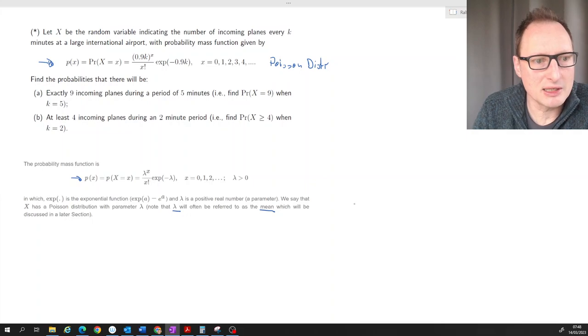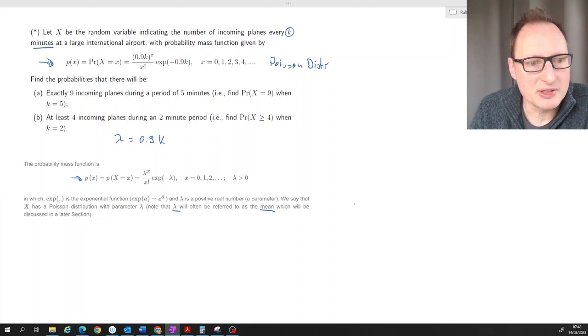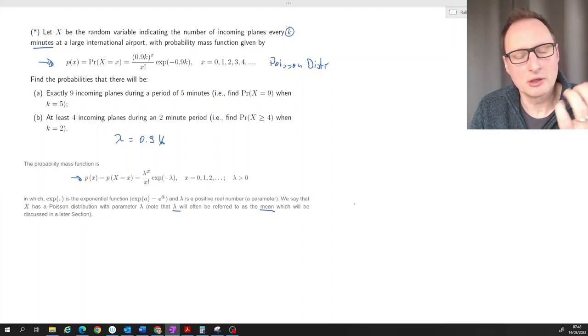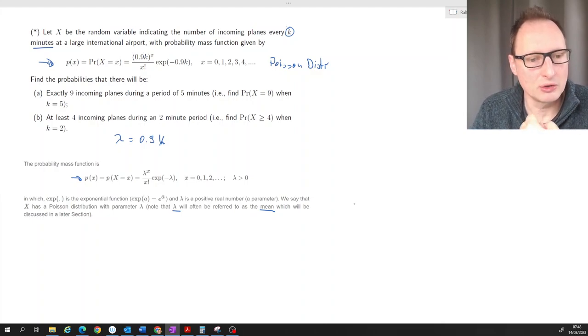Now we see here in this case the lambda is equal to 0.9k and what is that k? That k stands for k minutes. So basically this is written such that it is flexible depending on what time interval we are looking at.